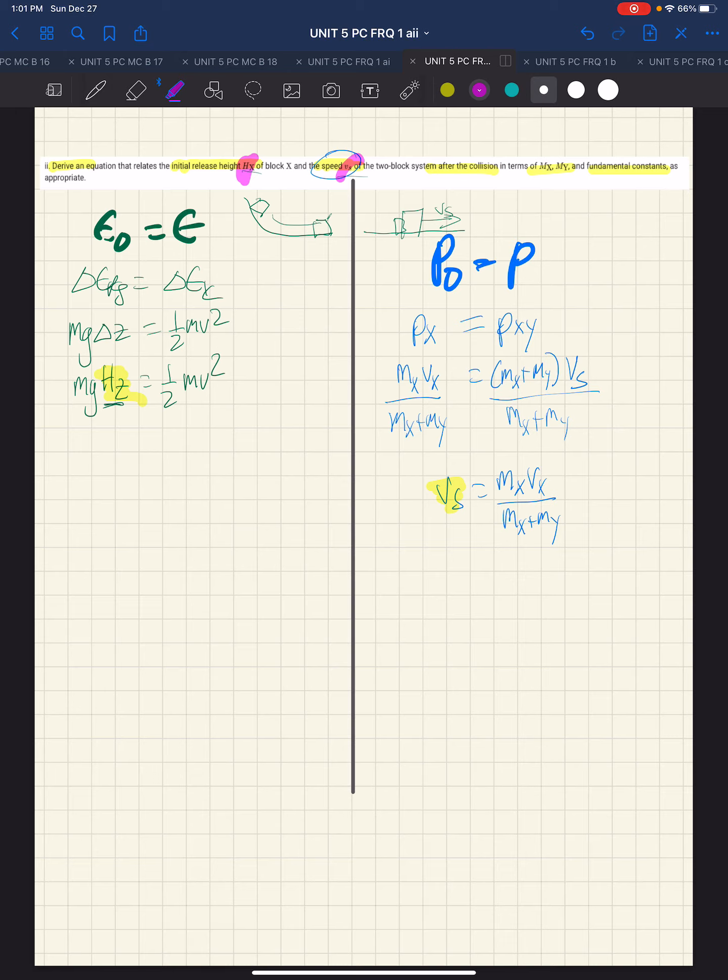If we look on the right side here with the momentum, the things that we are asked to use are mx, vx, and my, but we are not asked to express it in terms of vx, the initial velocity of x.